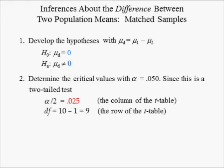Since the column of differences contains 10 values, the degrees of freedom are equal to 10 minus 1, or 9, which is the row in which the critical value is found. Using the t-distribution table, the upper critical value in row 9 and column 0.025 is 2.262. By symmetry, the lower critical value is negative 2.262.